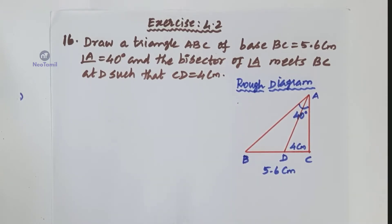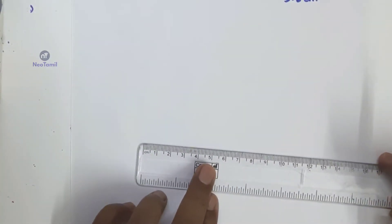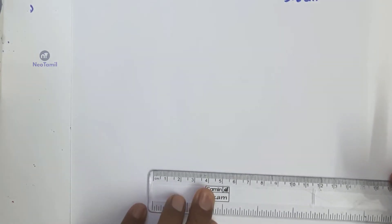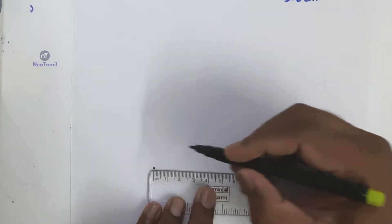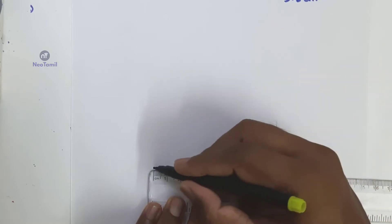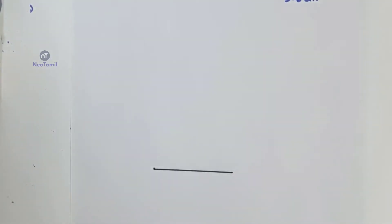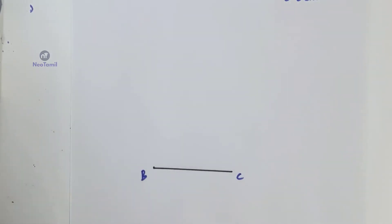We look at the base BC equal to 5.6 cm. We will draw the base BC equal to 5.6 cm. Base B and C.